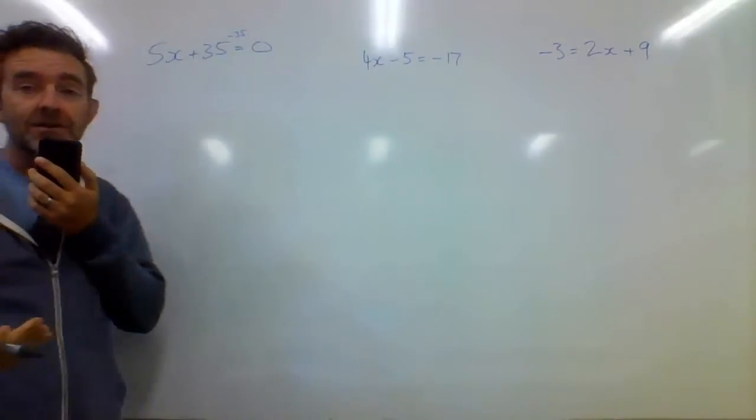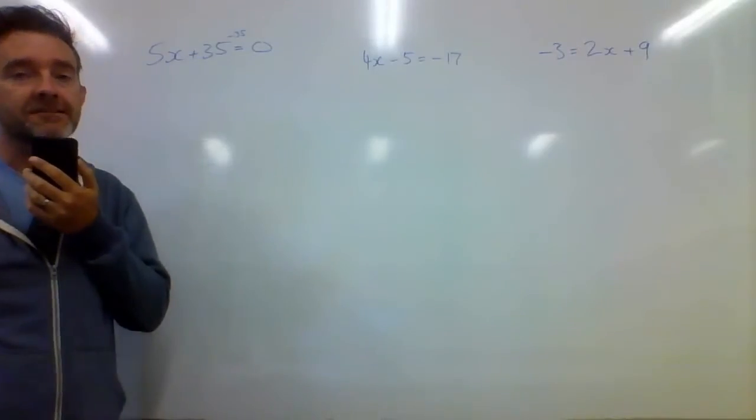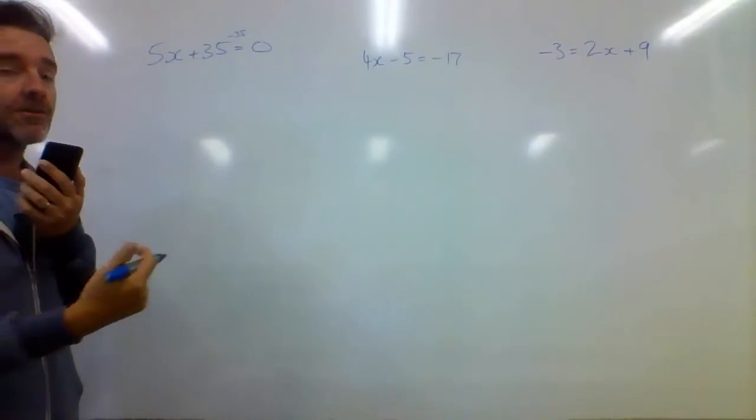And if we're taking away 35 there, like I just said before, that equal sign is king. So we have to take away the 35 on the other side as well.